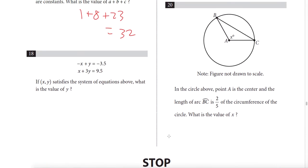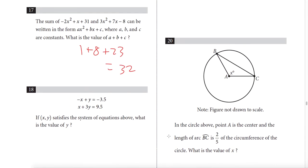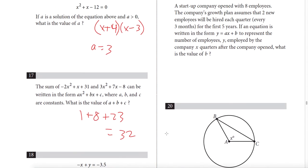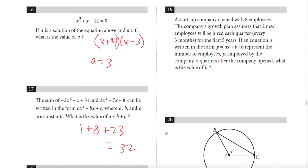Question 18: using elimination — just add the two equations and the x terms cancel. We get 4y = 9.5 − 3.5 = 6, so y = 6/4 = 3/2.